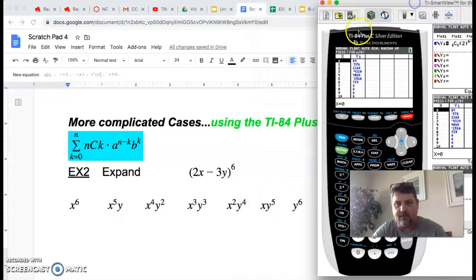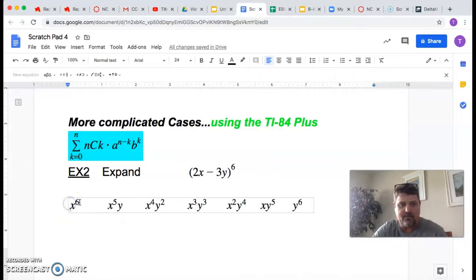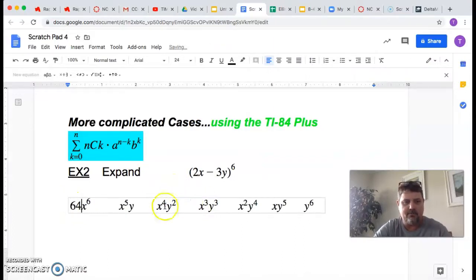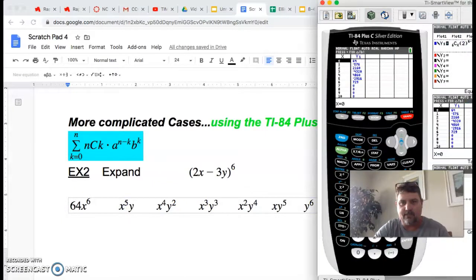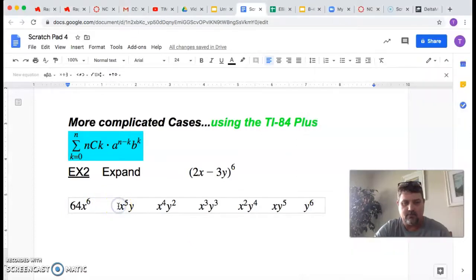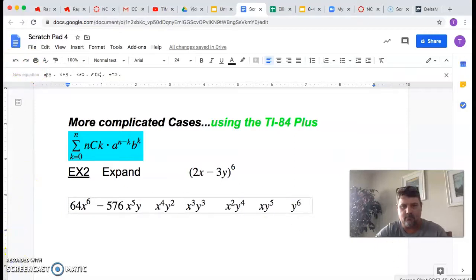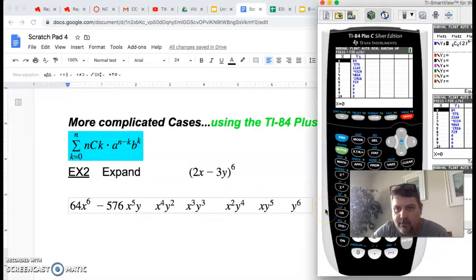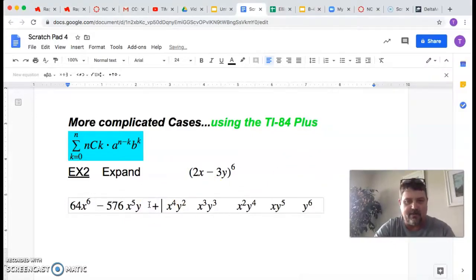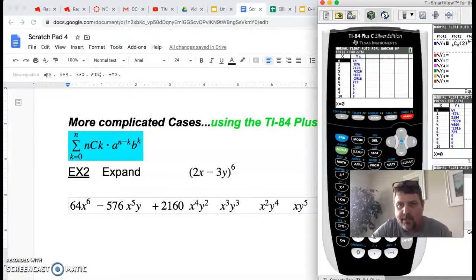So in other words, what we've just found is this. I wish I could show both at the same time. This guy becomes 64. The next one is negative 576. And then the next one is 2,160. Notice the signs are taking care of themselves for us. And the next one is negative 4,320.